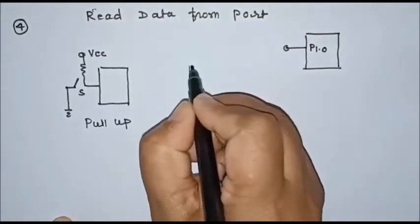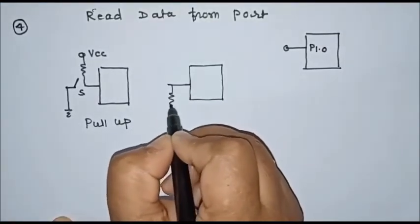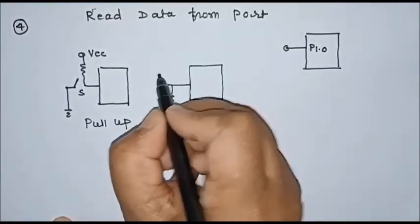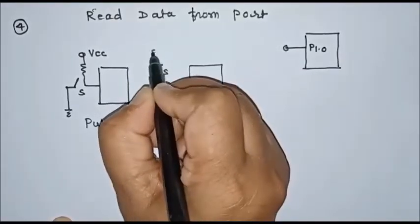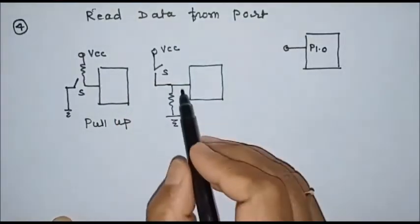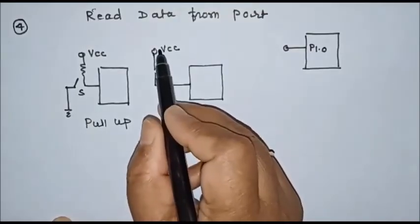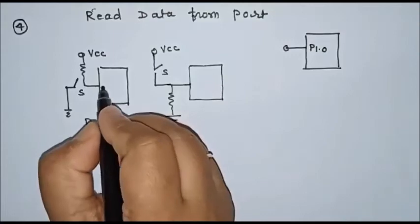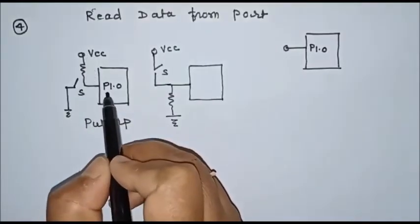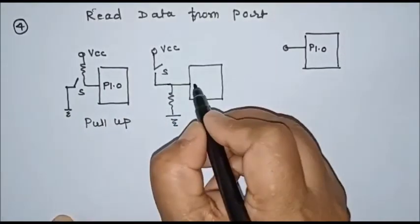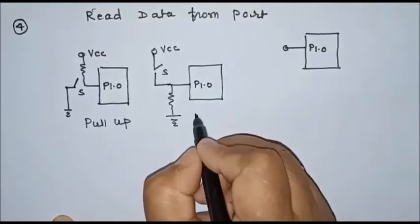In a pull-up configuration, when a switch is closed the pin connects to ground, and initially it is connected to VCC through the pull-up resistor. For a pull-down configuration, the pin is initially connected to ground, and with an input switch it can be connected to VCC. So in pull-up configuration, the pin is initially at logic 1; in pull-down configuration, the pin is initially at logic 0.